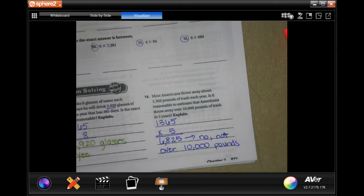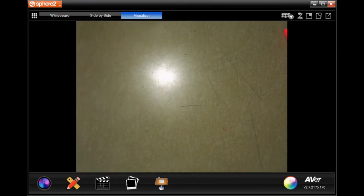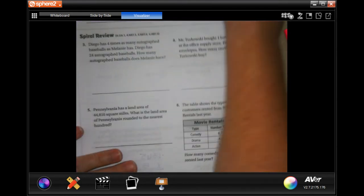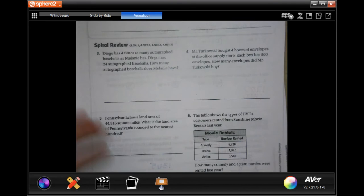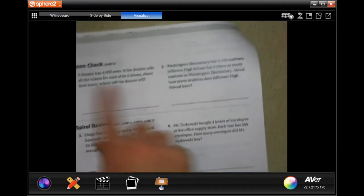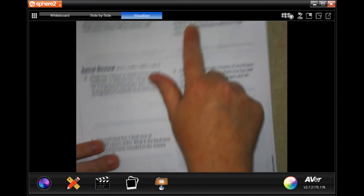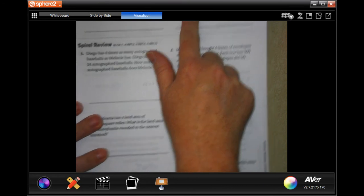You guys can do your lesson check on the back. You can totally do that. You're amazing. So you guys are going to do one and two on the back. We are going to go to our spiral review.